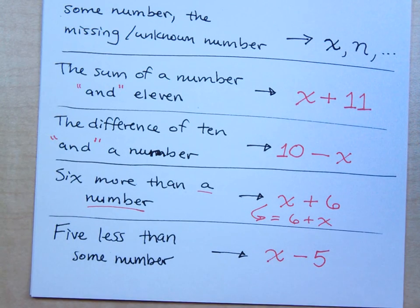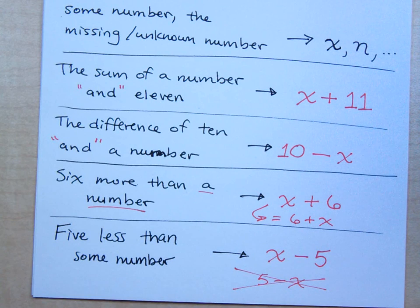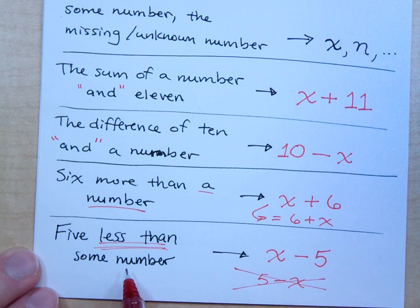And because if you say five minus X here, that is wrong. There is no commutative property for subtraction. So if you have those flipped and they're on the wrong side of the subtraction, then you're wrong. And that will mess up everything else that you do after that. So the five less than means I'm taking five away from, in this case, some number.